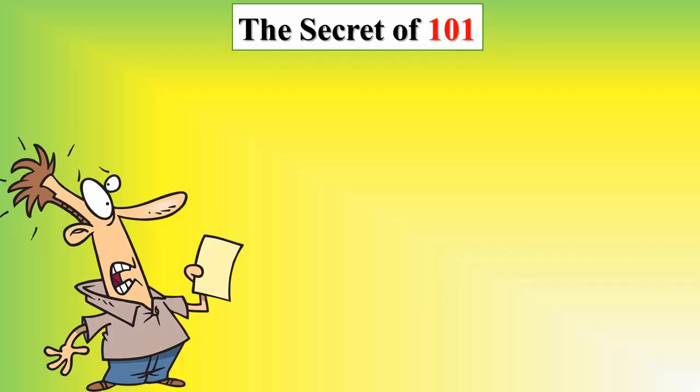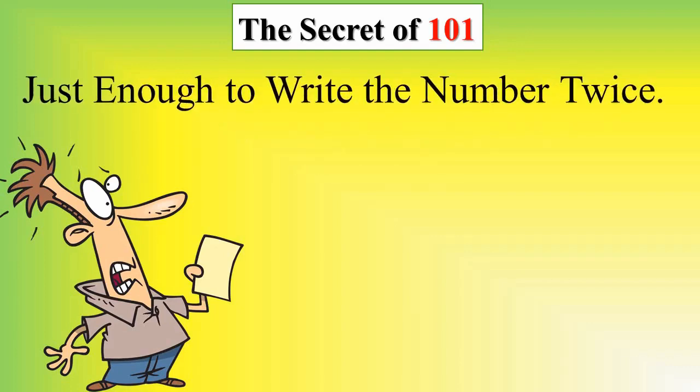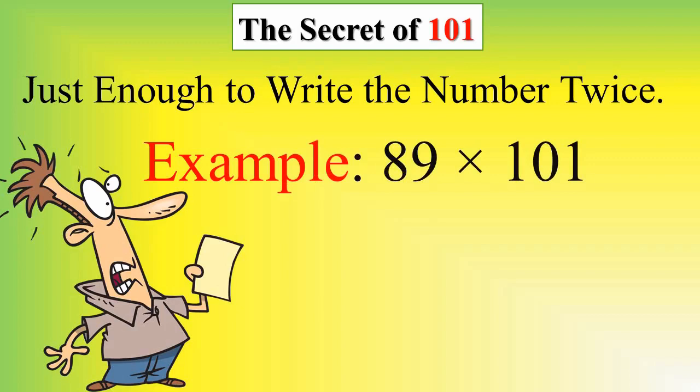Multiply numbers by 101. Just enough to write the number twice. For example, here we have 89 multiplied by 101. Yeah, 89,89.